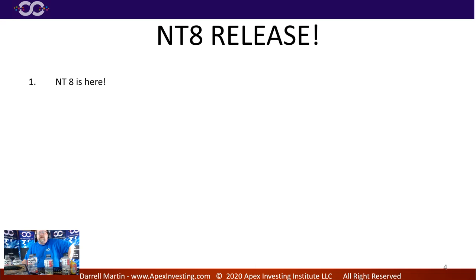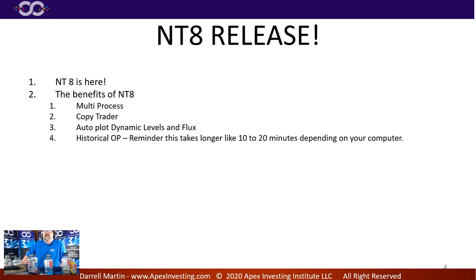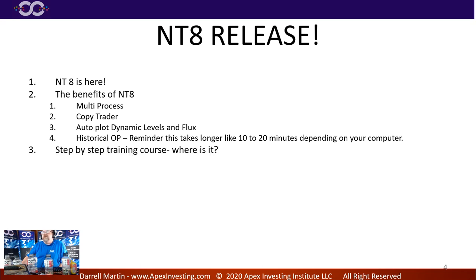NinjaTrader 8 is here, and the training is already up. Benefits of NT8: multiprocessor support, copy trader, it plots dynamic levels and flux levels automatically, and you get historical order prints. The downside of historical order prints is it has to plot every single tick and pull all the volume out, so it can take 10 to 20 minutes to load your charts depending on your computer. Just let those charts load up — if it's only taking 10 or 20 minutes, that's not abnormal. After that, it's lightning fast and uses very little processing power.